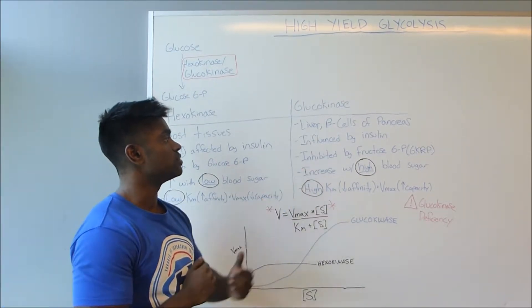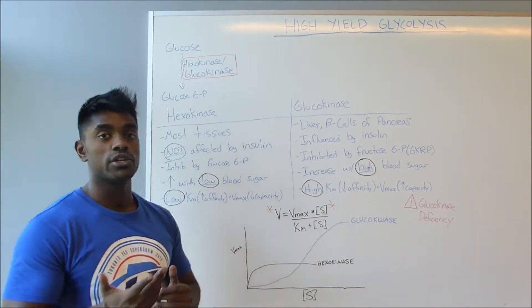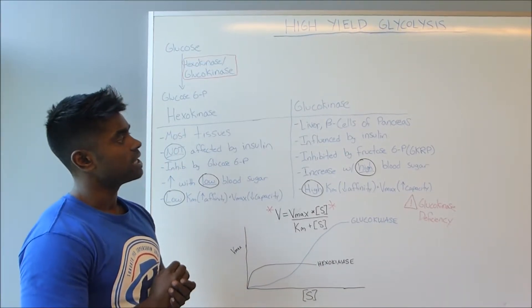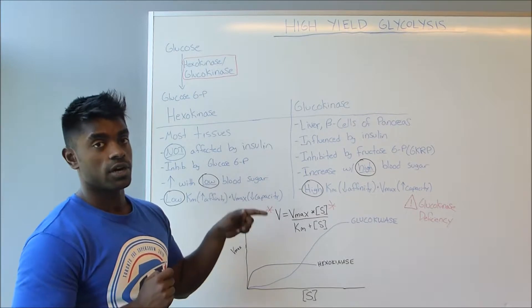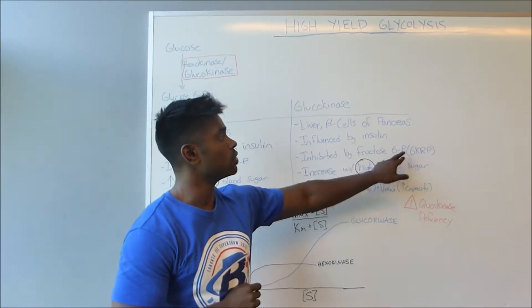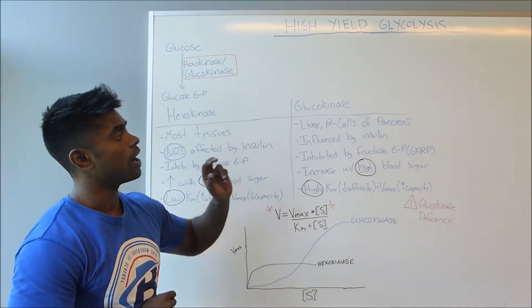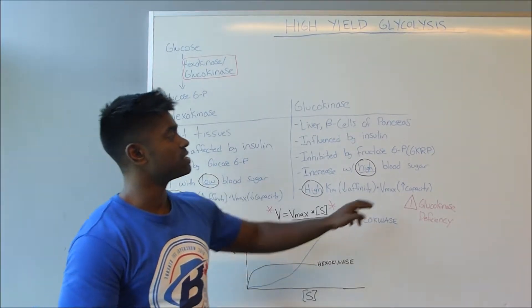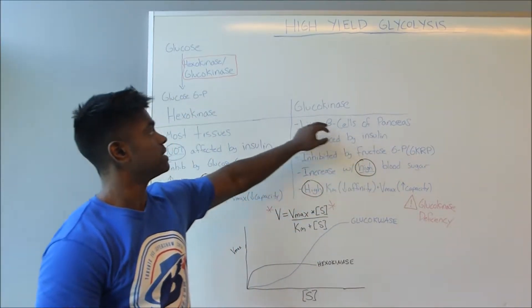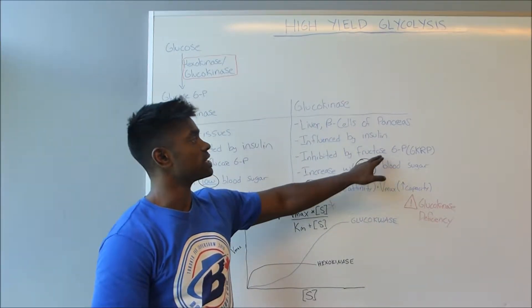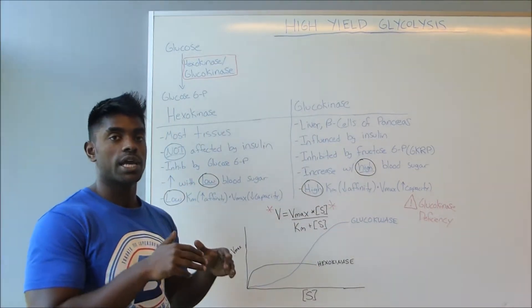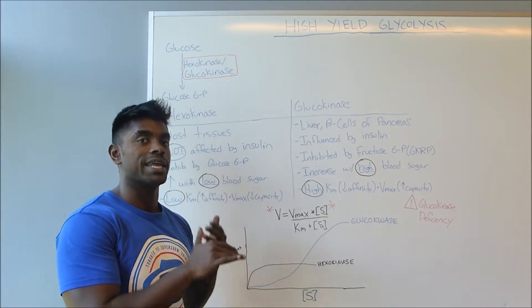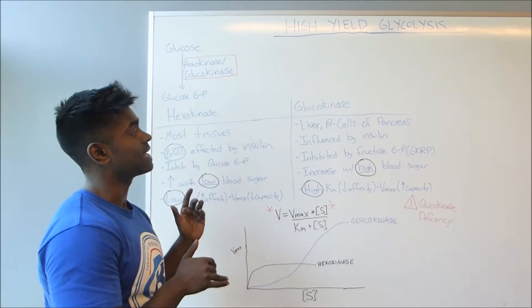Now the inhibition that occurs due to fructose 6-phosphate is actually quite interesting, because glucokinase is inhibited by fructose 6-phosphate and also glucokinase regulatory protein. So what's going to occur is that this protein is going to bind to glucokinase, and then along with fructose 6-phosphate, this is going to cause glucokinase to translocate into the nucleus of the cell and actually inhibit its activity.